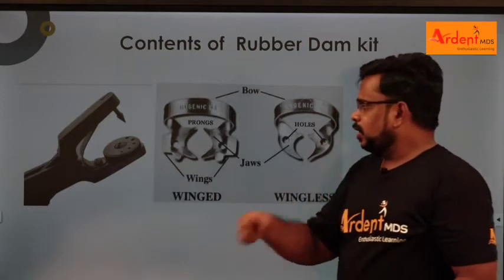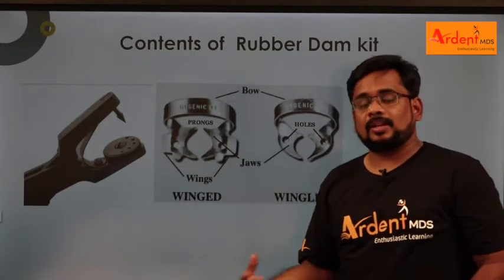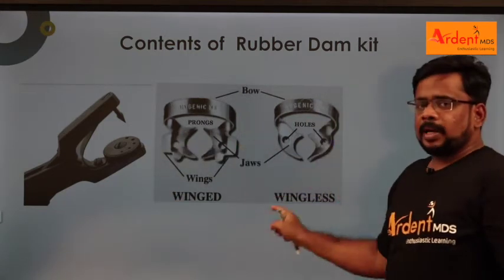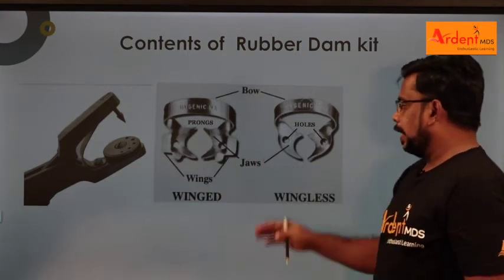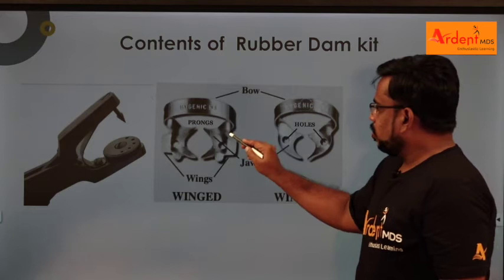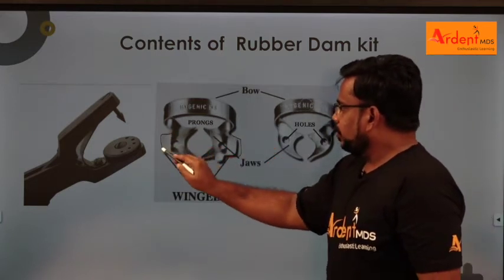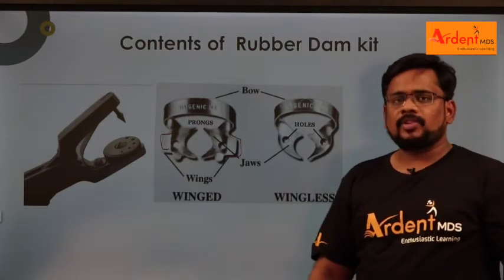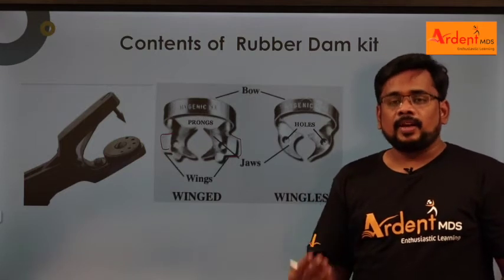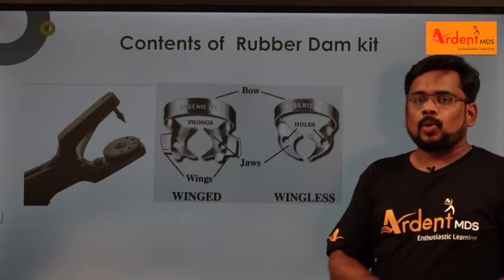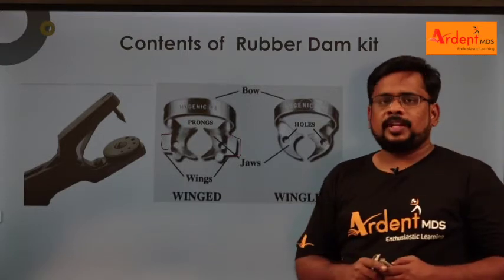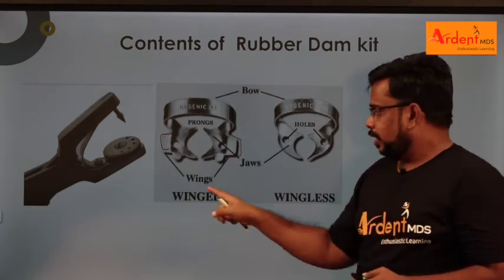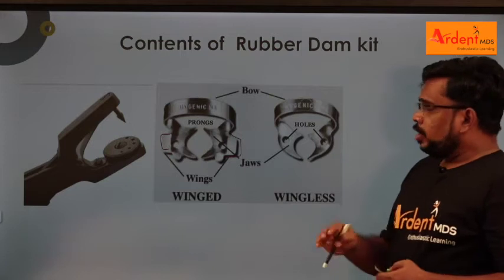Based on the mesiodistal dimension of the teeth, you select the particular hole size. If the mesiodistal dimension is smaller, go for a smaller size hole; if larger, go for a larger size. The rubber dam clamp has two types: winged clamp and wingless clamp. Extra retraction of the rubber dam is achieved with the winged rubber dam, providing more accessibility and visibility to the working area.